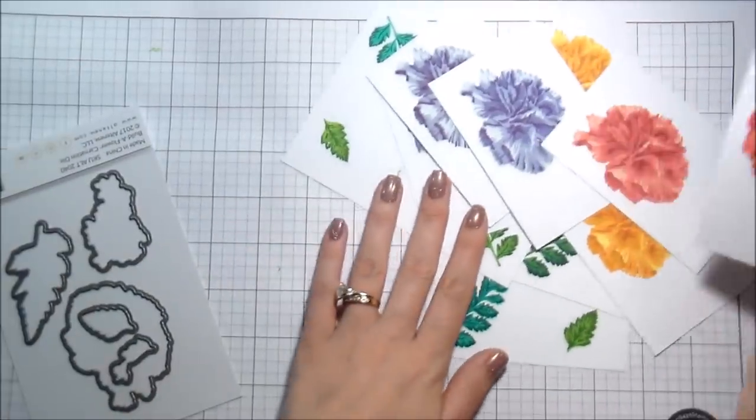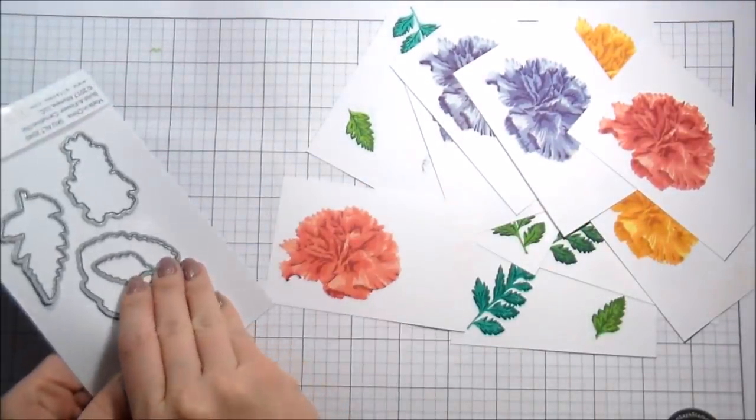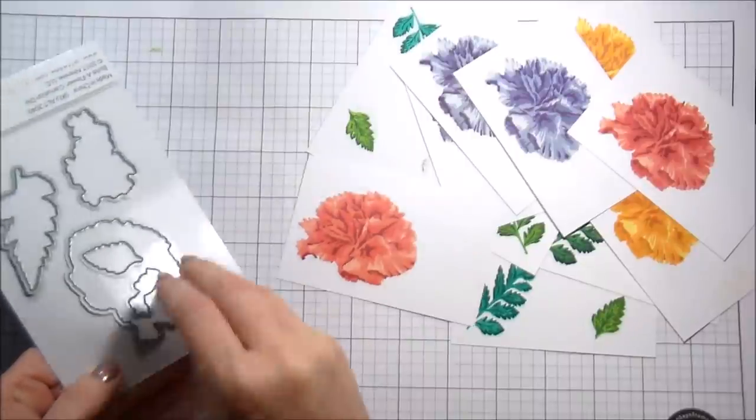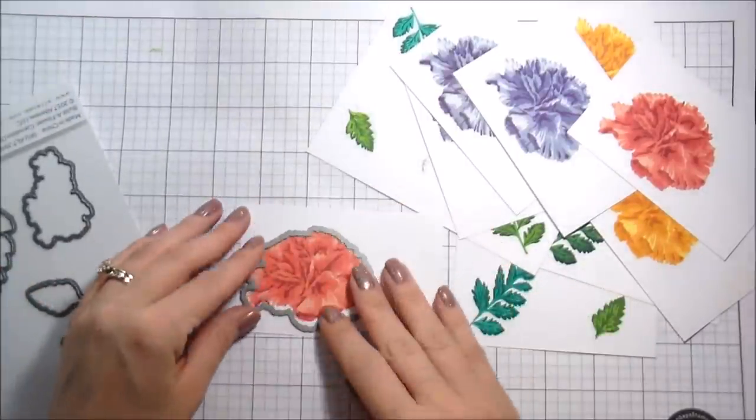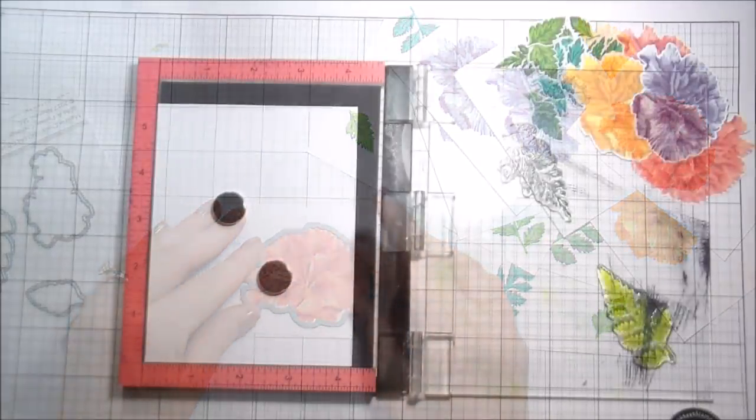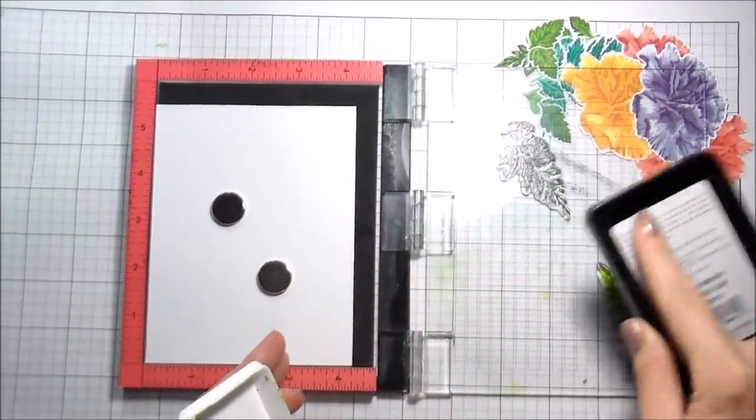Just a lot of fun combinations that you can do. And then I'm going to start die cutting them. So these die cuts already come separated. So it's super easy, peel it off the sticky strip and then cut them.